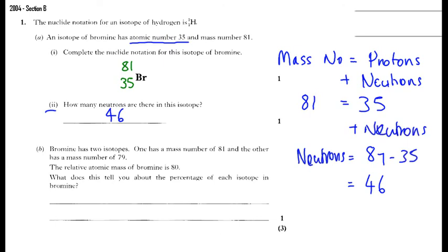Okay, and the last question is about the relative atomic mass. Bromine has two isotopes. One has the mass number of eighty-one, and the other has the mass number of seventy-nine. The relative atomic mass of bromine is eighty. What does this tell you about the percentage of each isotope in bromine?